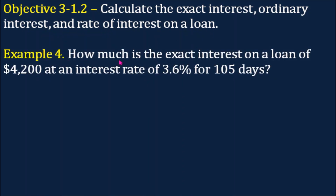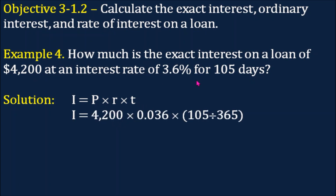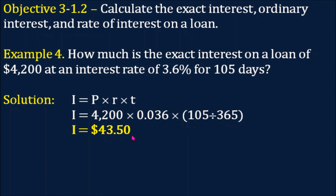Example number 4: how much is the exact interest on a loan of $4,200 at an interest rate of 3.6% for 105 days? Using the formula I equals P times R times T: P is $4,200, R is 3.6% or 0.036, and because it's exact interest, T is 105 divided by 365. Performing the operation, our answer is $43.50.